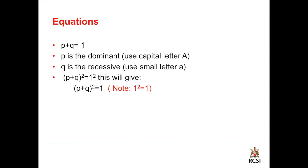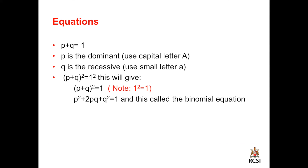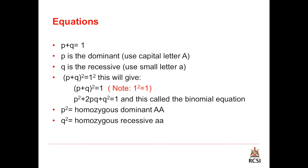If we square both sides of the equation p plus q equals 1, this gives us — due to mathematical principles — p squared plus 2pq plus q squared equals 1, and this is called the binomial equation. p squared equals homozygous dominant (double capital A), q squared equals homozygous recessive (double small a), and 2pq equals heterozygous (capital A, small a).